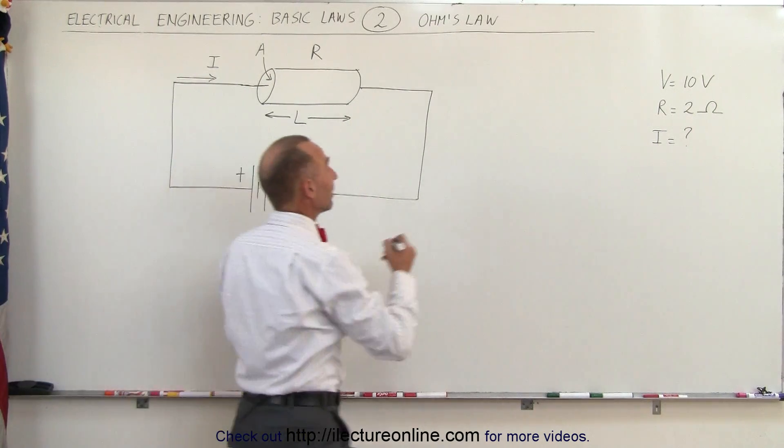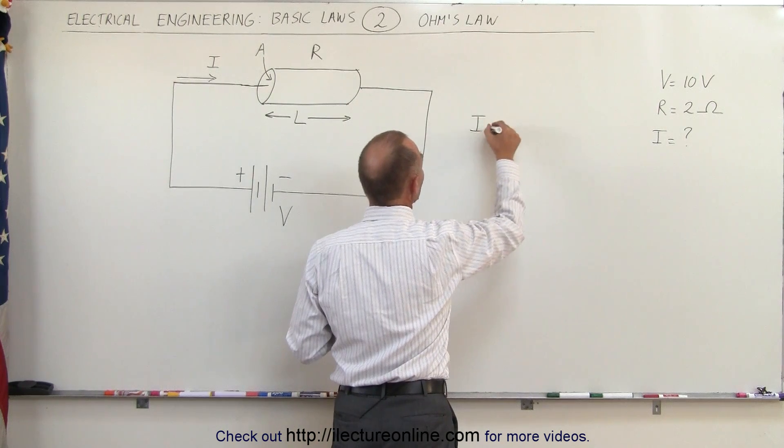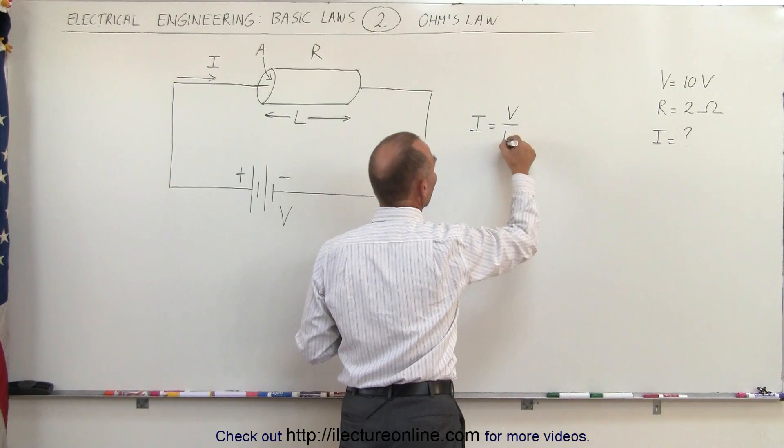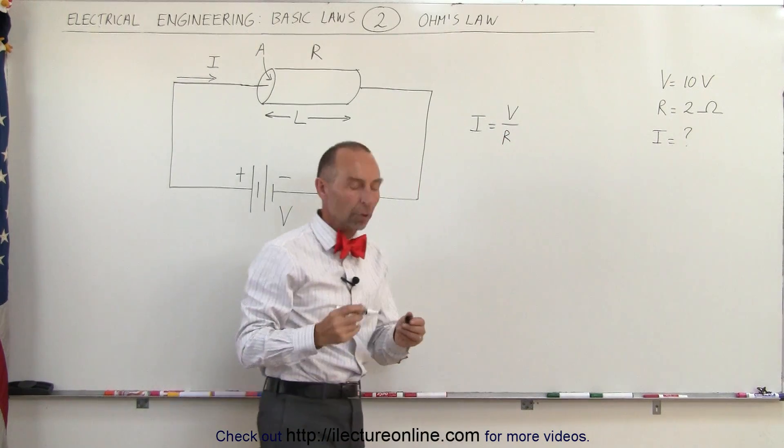Ohm discovered that the amount of current flowing to the circuit is equal to the ratio of the voltage pushing current to the circuit divided by the resistance opposing that push.